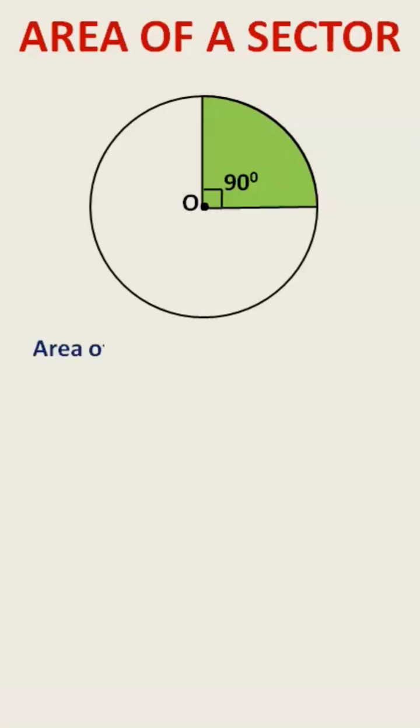As the area of the circle is pi r square, we can write the area of the quarter circle as 1 by 4 pi r square as it is 1 fourth of the circle.